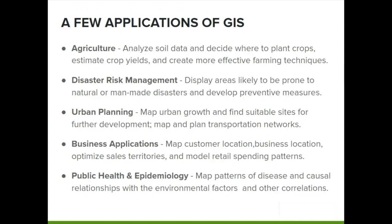For example, GIS is used to find directions and navigate from your smartphone, or even analyze crop yields for more effective agricultural production. GIS can be applied to nearly every industry or topic, from disaster risk management to business. GIS constantly informs everyday life. Organizations use GIS data to learn the what, when, where, and whys of your purchasing behavior so they can better target customers and market accordingly.